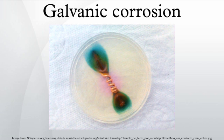Electrolytic Cleaning: the common technique of cleaning silverware by immersion of the silver and a piece of aluminium in an electrolytic bath is an example of galvanic corrosion.